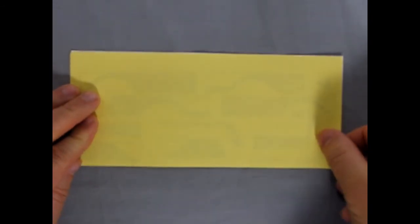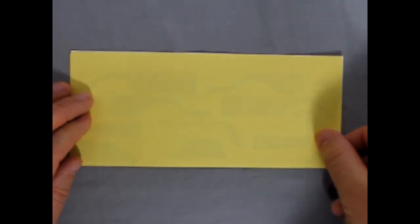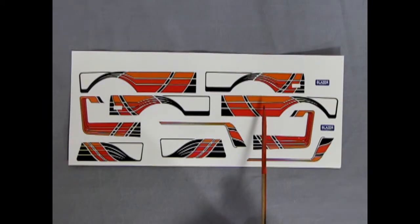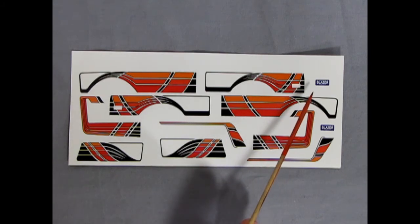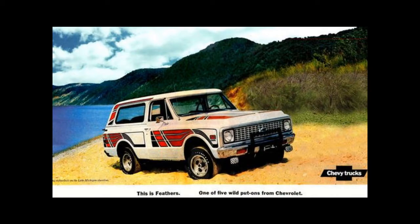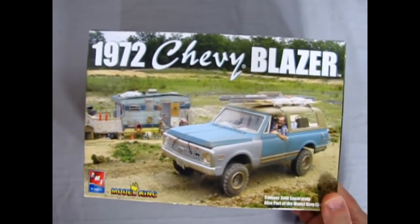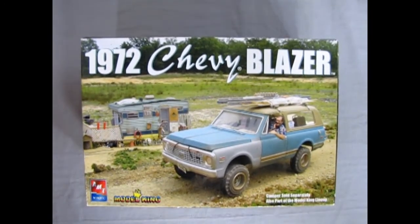Last but not least we have our decal sheet. And here's the unveiling. Get ready for some pretty awesome looking stuff. There it is! Look at that orange. Bright orange, medium orange, and red along the bottom. Black striping in here. All kinds of crazy stuff going on. And then here we have Michigan license plates that say Blazer. And that completes our look at our 1972 Chevy Blazer from AMT Ertl Model King under the old RC2 banner.